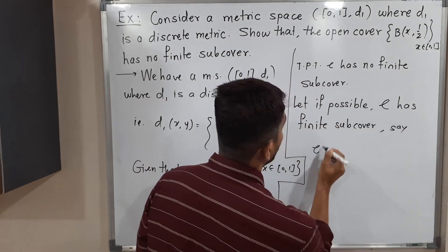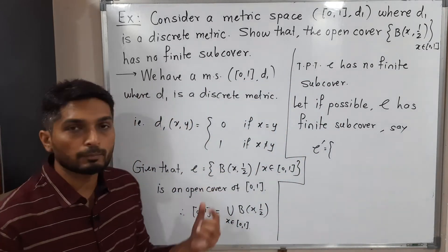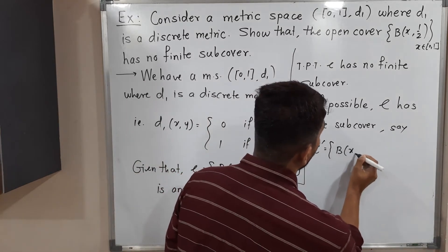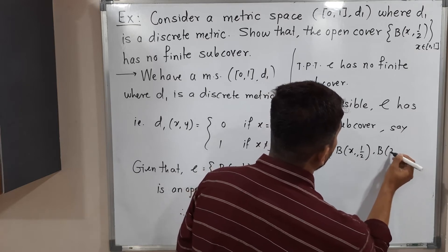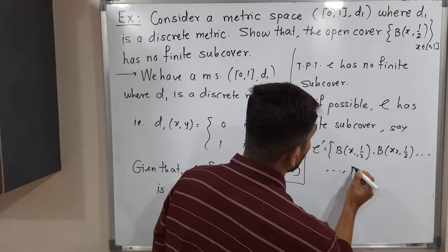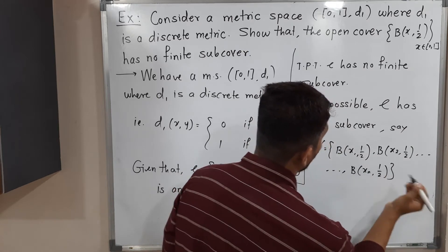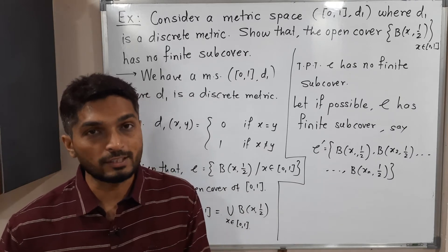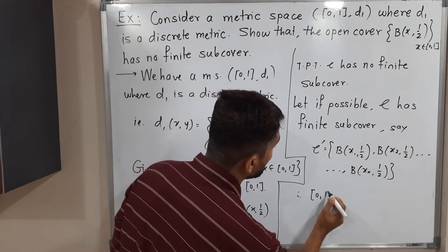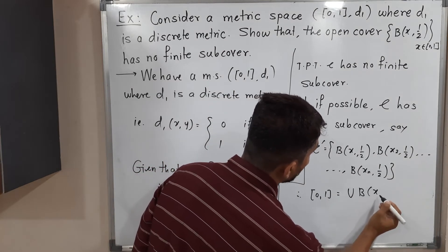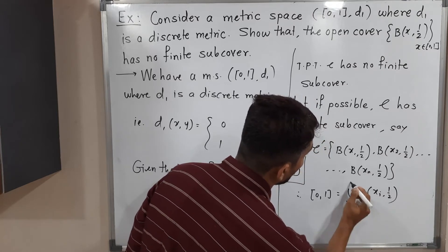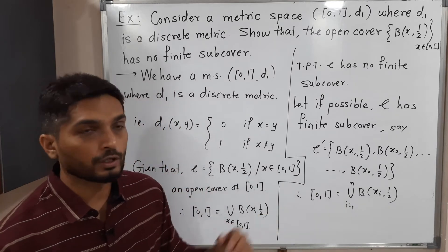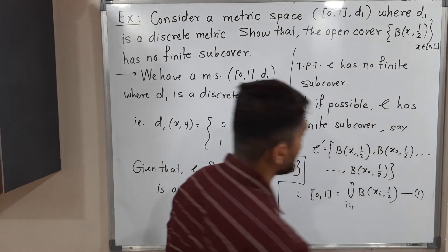Let us call the finite sub-cover C'. So C' has finite sub-cover, meaning there are only finitely many sets which can cover the entire set [0,1]. Let us call them B(x1, 1/2), B(x2, 1/2), ..., B(xn, 1/2). Therefore, [0,1] = union of B(xi, 1/2) for i from 1 to n. Call this statement 1.